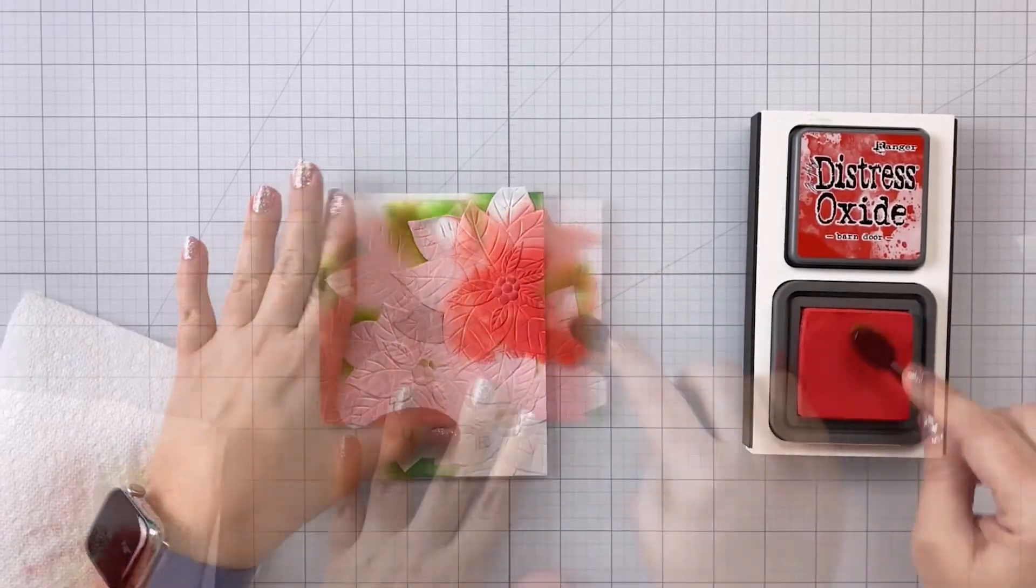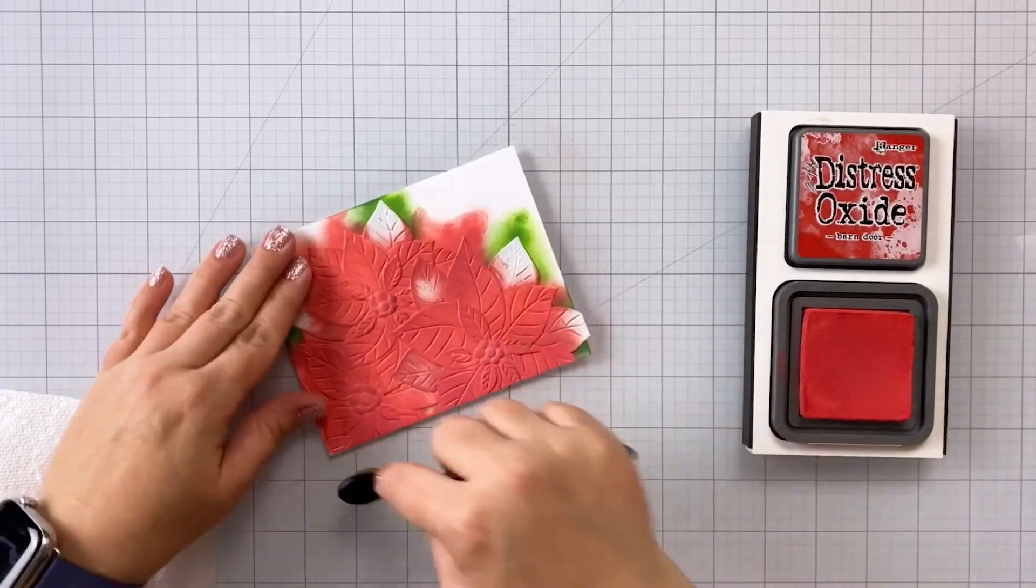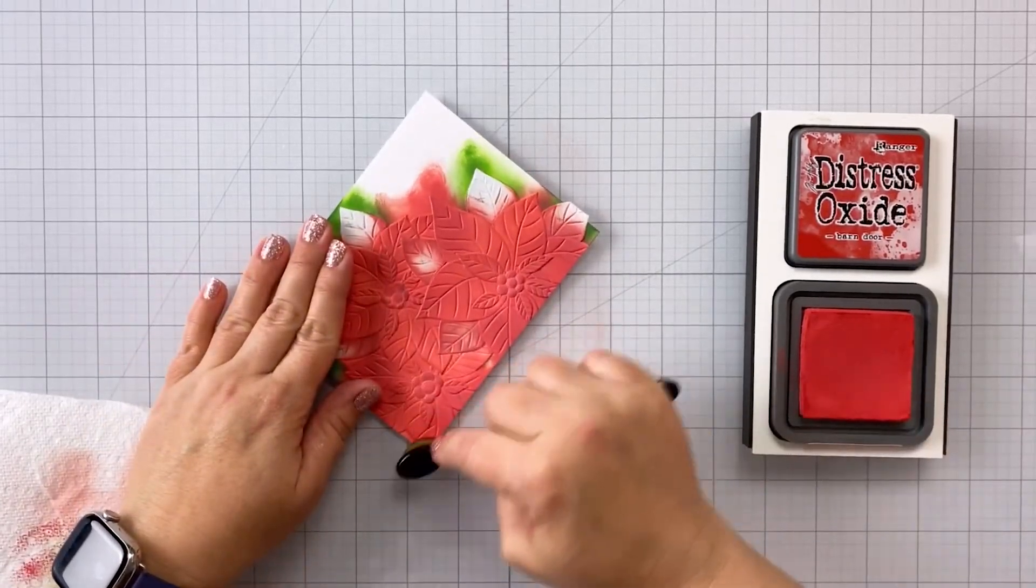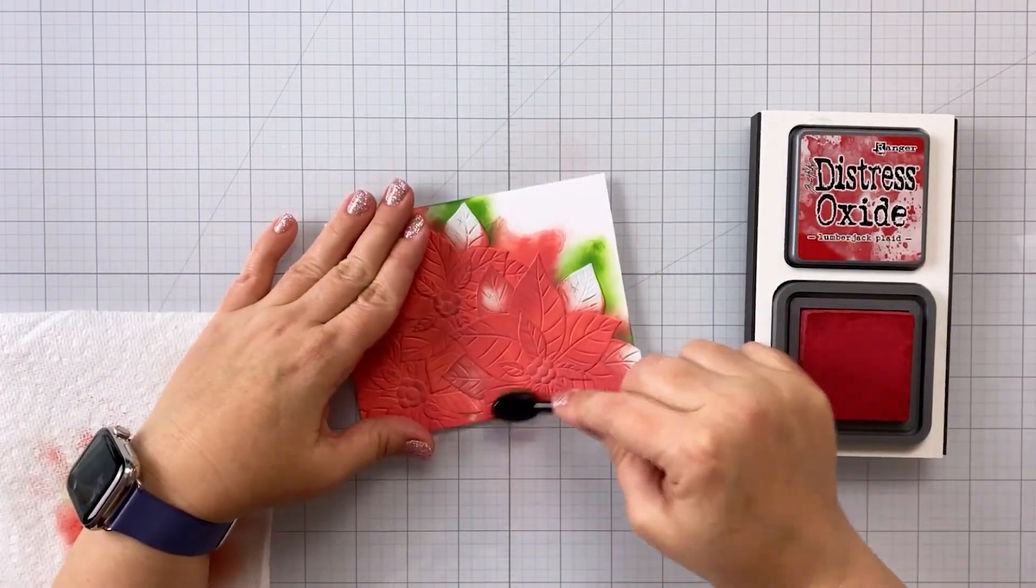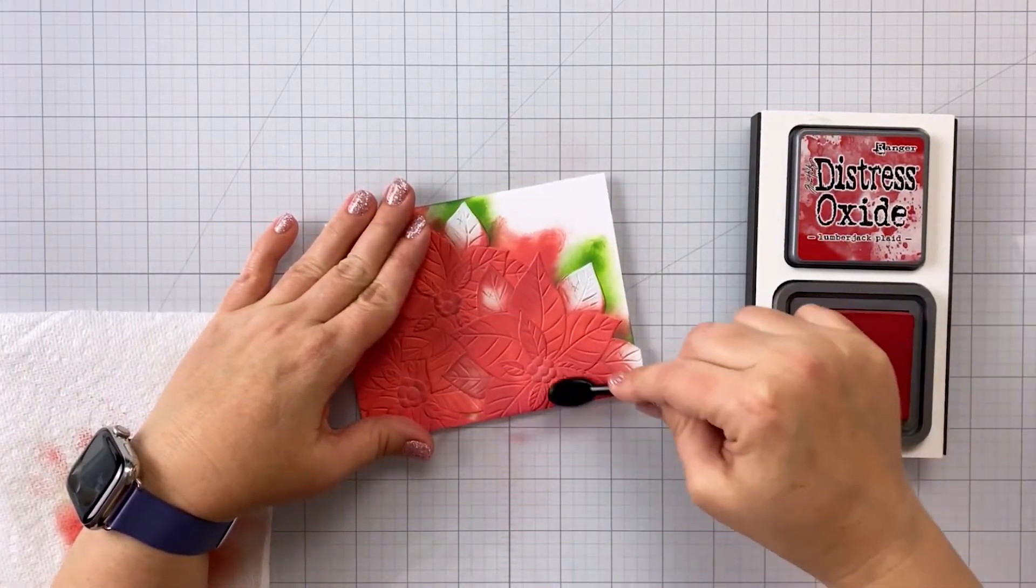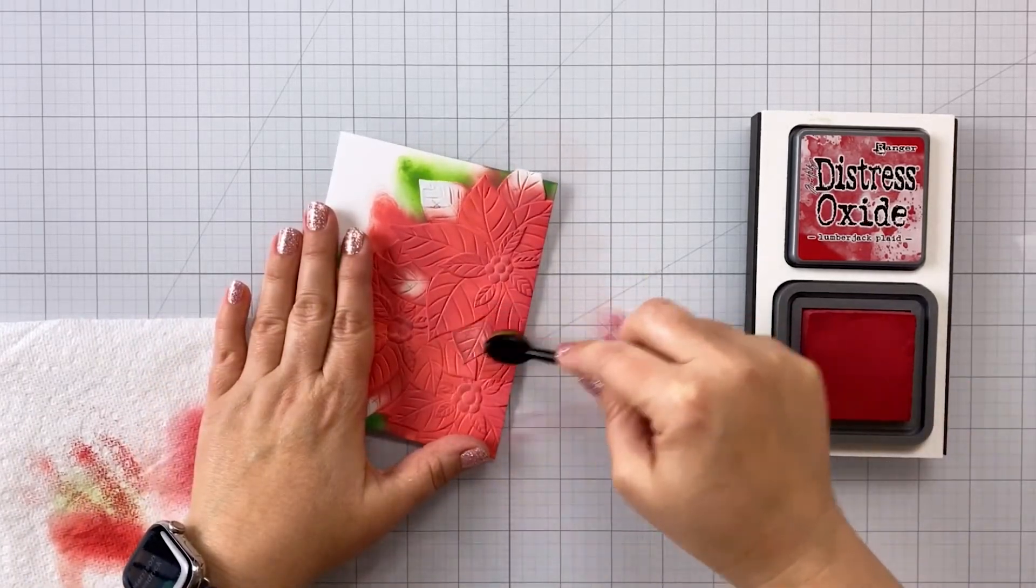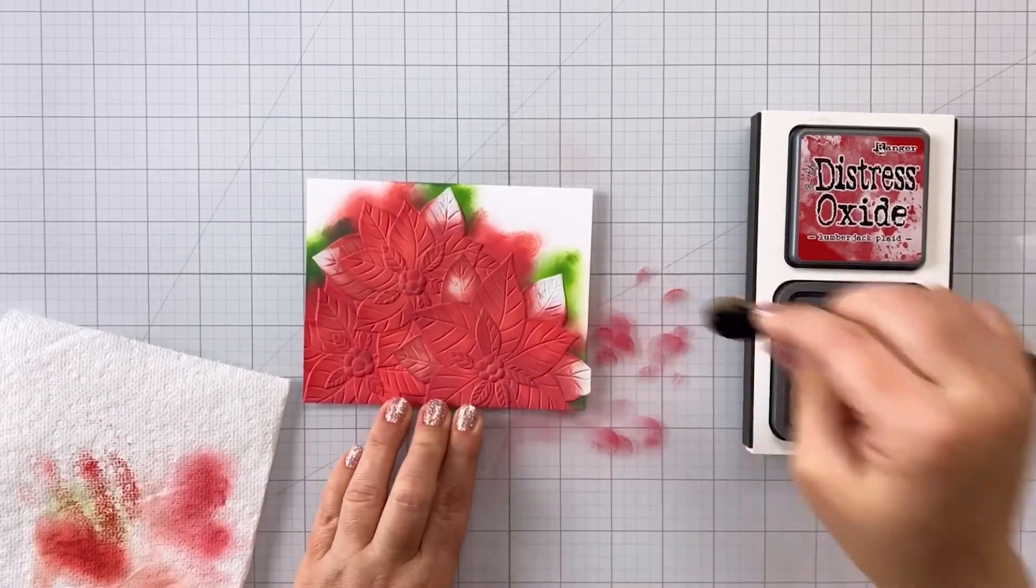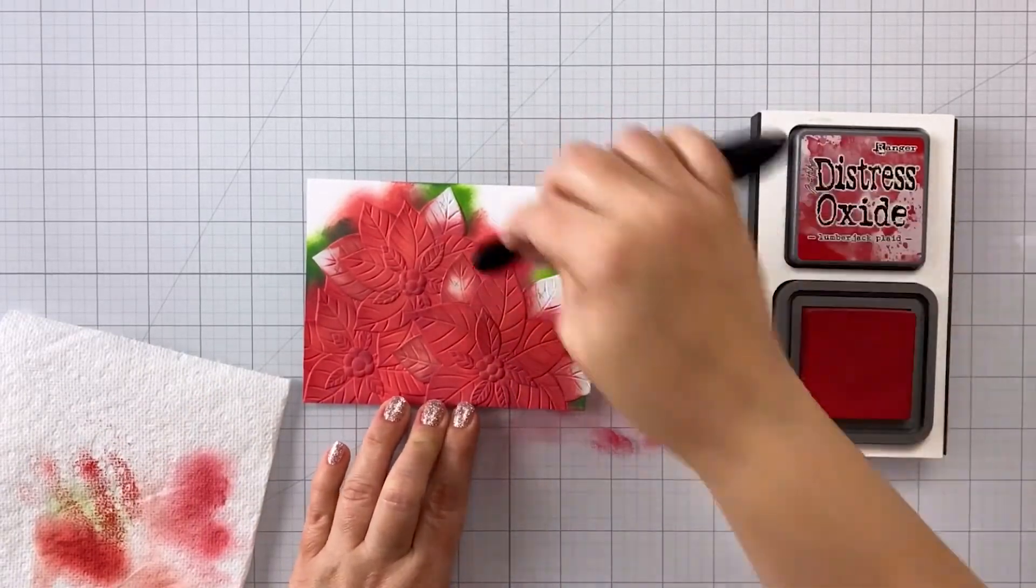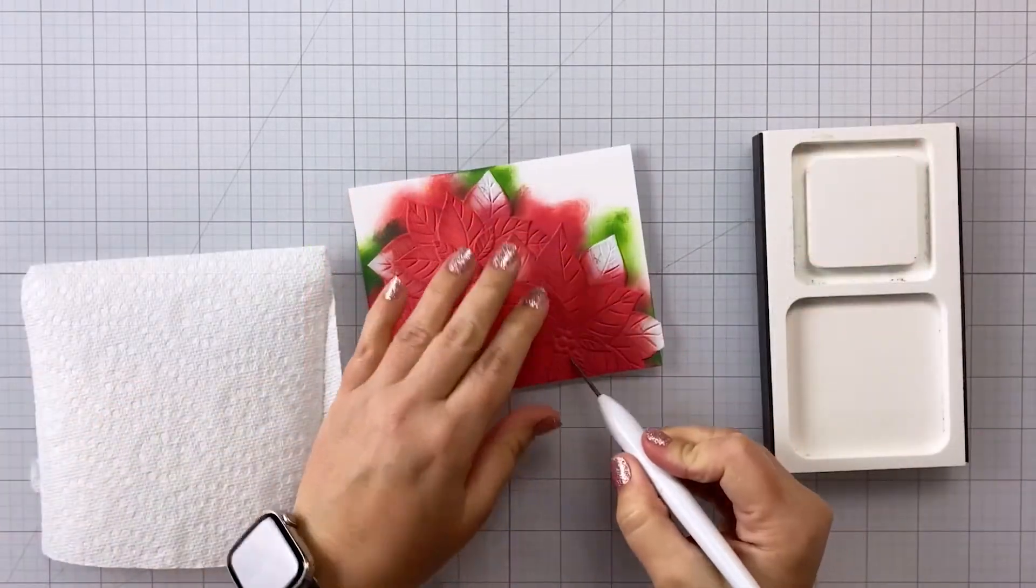And then for my shading color, I am going to be using the brand new lumberjack plaid. Now the lumberjack plaid is a really beautiful color. If you haven't checked out the new color, I definitely recommend you take a look at it because it's just a really fun, festive holiday red color. I think it works really well with the barn door, especially to create some shading. So you can see, I just went around each of the leaves here and there.